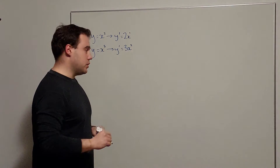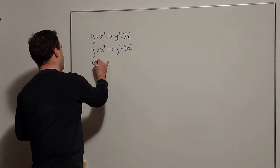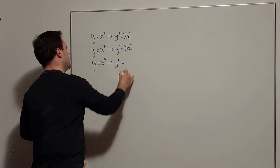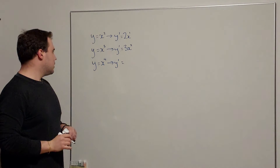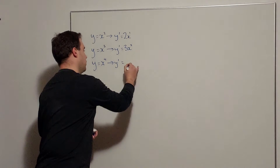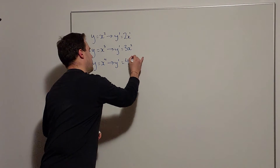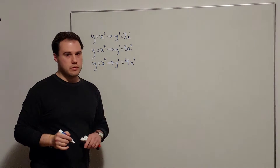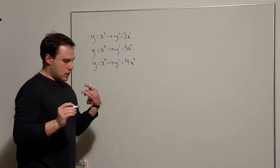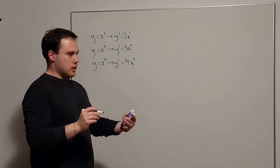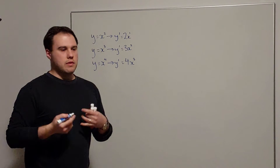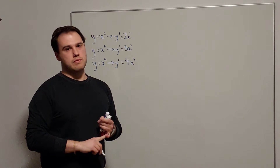And then if you did your homework, hopefully after a bit of tedious algebra, you ended up with the gradient function of x to the 4 being 4x cubed. So these are all polynomials — the variable x only has positive integer powers.